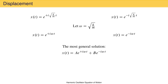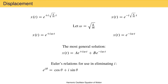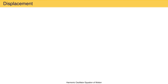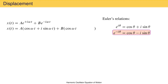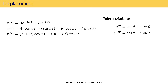To write displacement without the imaginary number, we employ the Euler relations: e to the i theta equals cosine theta plus i sine theta, and e to the minus i theta equals cosine theta minus i sine theta. We use the first Euler relation to replace e to the positive i omega t and the second to replace e to the minus i omega t. Gathering together cosine terms gives cosine omega t times the quantity a plus b, and gathering sine terms gives sine omega t times the quantity ai minus bi.